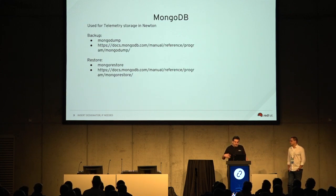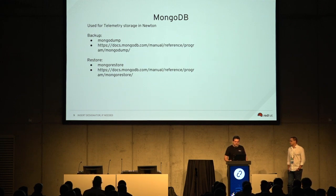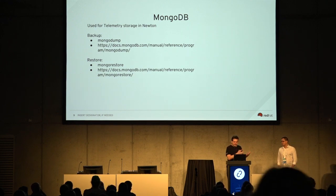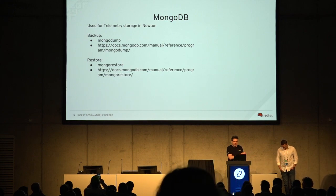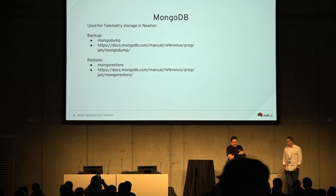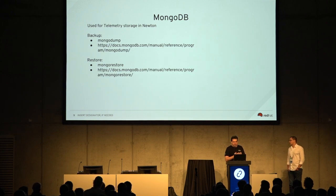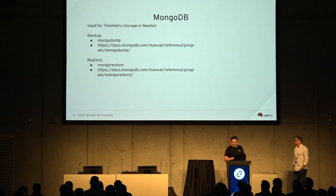For MongoDB, which is used for telemetry storage in Neutron — it has since moved to Gnocchi — but for OSP 10 which is based on Newton, it's quite simple: just mongodump and mongorestore. There are links to the documentation on how to do that as well.